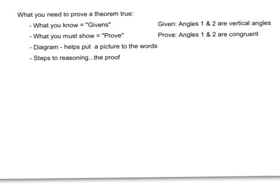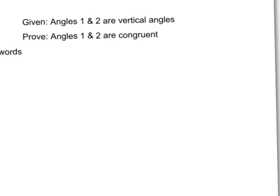So, it might look something like, given angles one and two are vertical angles, prove that angles one and two are congruent. We're going to work through some exercises in class, rather than just showing you a proof right off the bat. You can see one example in the text if you want to look at them. But, we are going to prove several theorems in class as part of an exercise. So, don't miss that day.